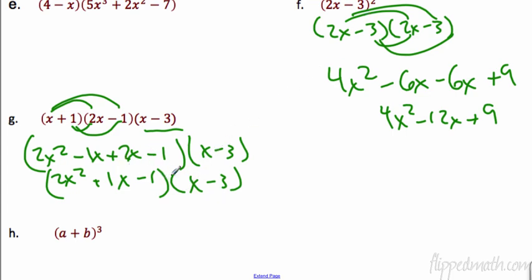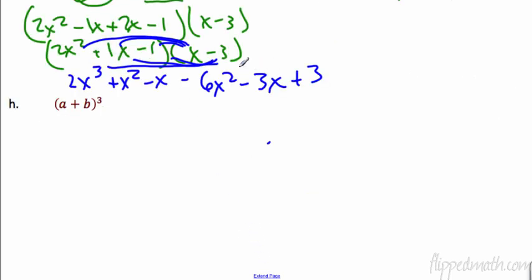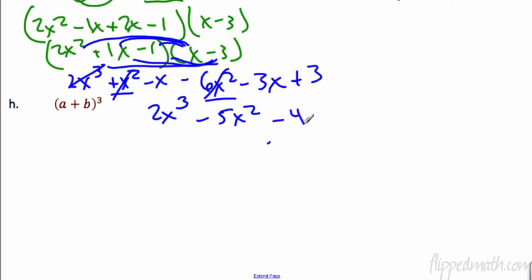Now we have to play the same game — distributing from the binomial to the trinomial. I like going from the smaller binomial. Distributing x: we get 2x to the third, then x times 1x is plus 1x squared, and x times negative 1 is minus x. Then distributing negative 3 to all three terms: negative 3 times 2x squared is negative 6x squared, negative 3 times 1x is minus 3x, and negative 3 times negative 1 is positive 3. Combining: 2x to the third, then positive 1 and negative 6 gives minus 5x squared, negative 1x and negative 3x gives negative 4x, and positive 3. Done with that one.